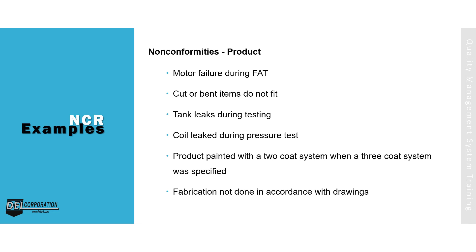Let's take a look at some non-conforming output examples. For product: motor failure during FAT, cut or bent items do not fit, tank leaks during testing, coil leak during pressure test, product painted with a two-coat system when a three-coat system was specified, fabrication not done in accordance with drawings.